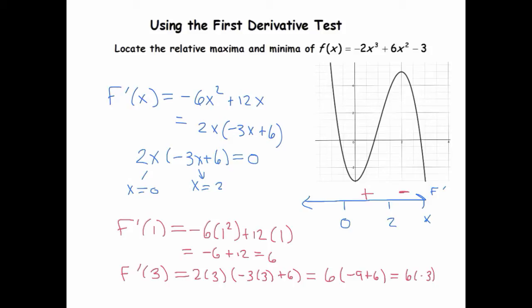And then lastly, I'll plug in negative 1. And when you do that, you get, I'm going to plug it into the second version again, the factored version. 2 times negative 1, negative 3 times negative 1 plus 6. And this ends up being negative 2 times a positive 9, which is a negative again.